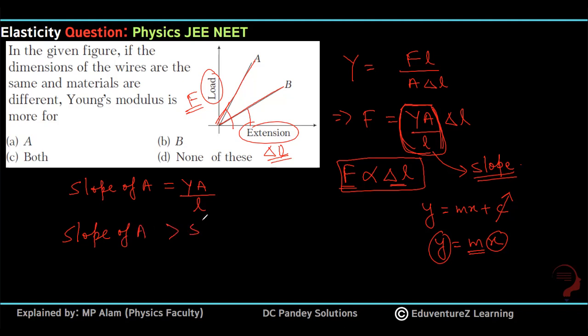Slope of A is greater than slope of B. If you write the slope of A, slope of A is greater than Y of B. That answers the question.